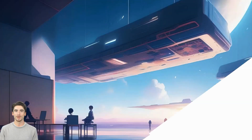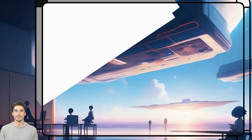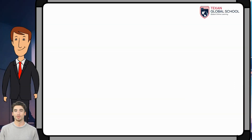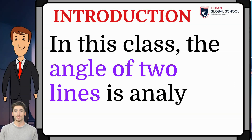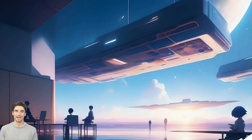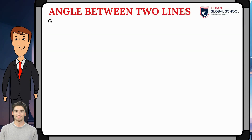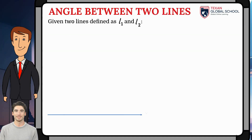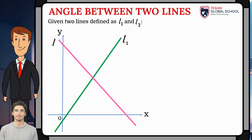This class analyzes the process to calculate the angle between two straight lines that intersect at some point on the plane, starting from any two lines, L1 and L2 in the plane, which intersect at the point C. We will make the deduction to find the angle between the lines.